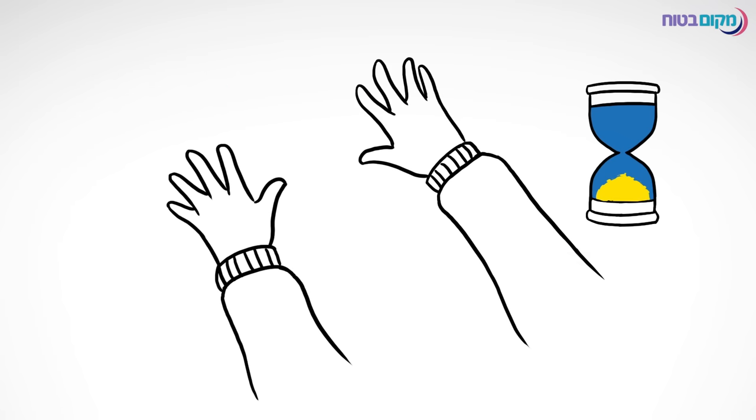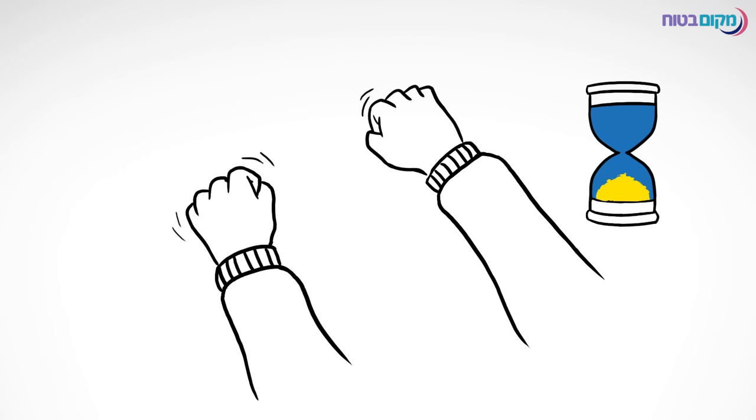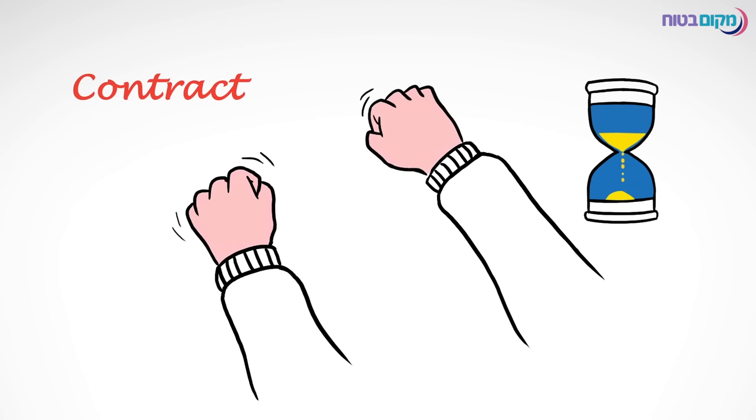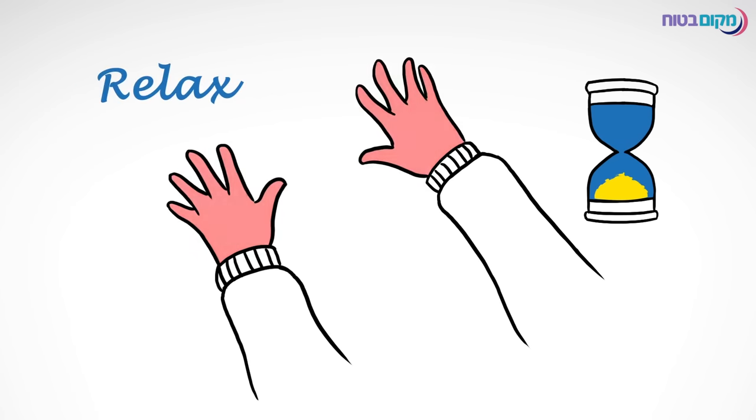Let's move on to the hands. Clench your hands into a fist and contract. Count down 5 seconds. 5, 4, 3, 2, 1, and relax.